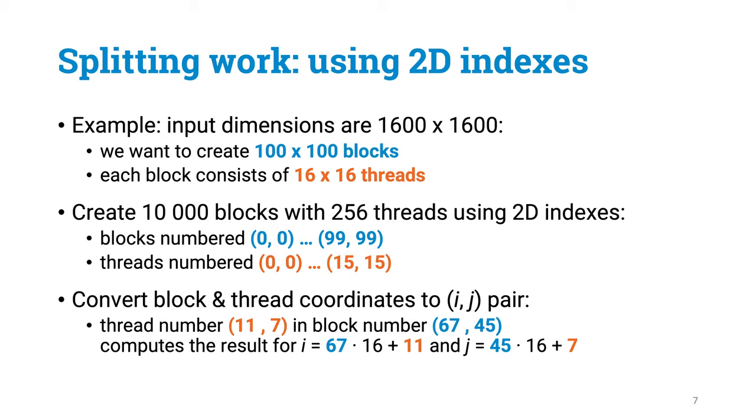So this is what we will use in our sample code today. But I'd really like to emphasize that these two-dimensional indexes are just a convenience feature. If you find it confusing or unhelpful, you can always use just one-dimensional thread and block indexes, and interpret them in your code whichever way you like. You won't lose anything if you do that.